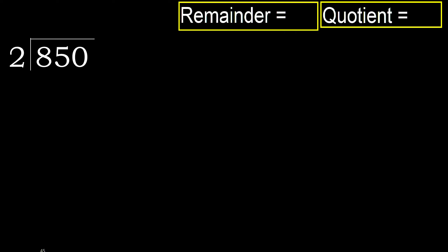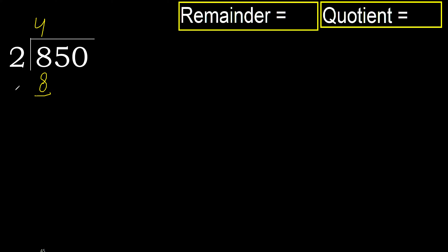850 divided by 2. 8 is not less, therefore with 8: 2 multiplied by which number is nearest to 8 but not greater? 2 multiplied by 5 is 10, which is greater. Multiply by 4 is 8, which is not greater. 8 minus 8 equals 0.